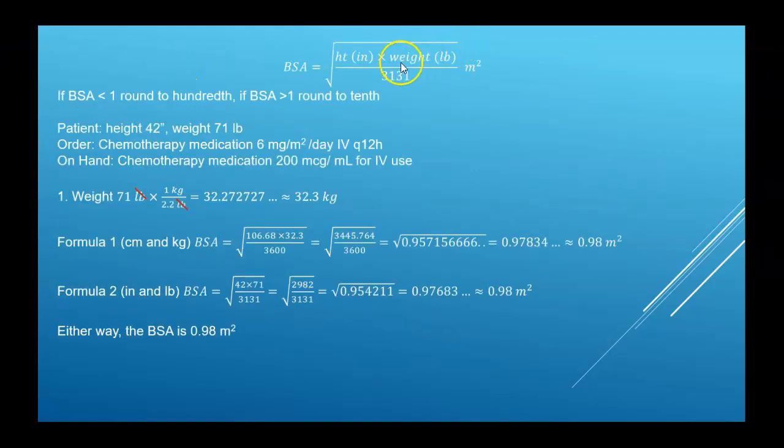Now with the body surface area, if the body surface area is less than one, we round to the hundredth. If it's less than one, that means there's no whole number, so there won't be any number before the decimal. It'll be a zero, so you're going to round to the second decimal place. If the body surface area is greater than one, there will be a number in front of the decimal, so then you round to the first decimal place.